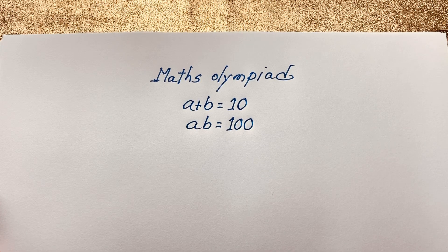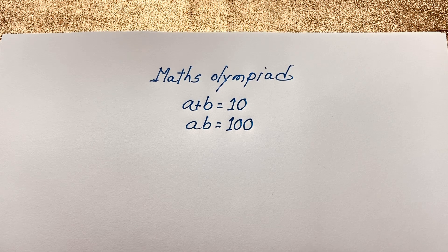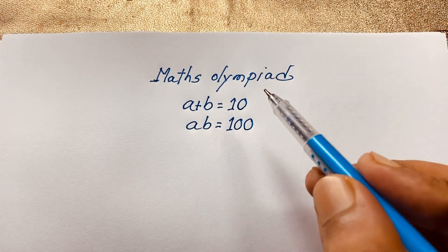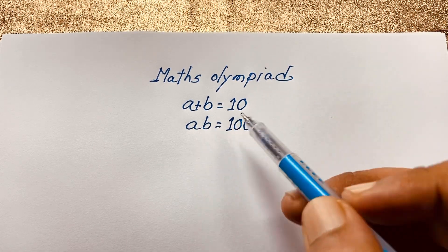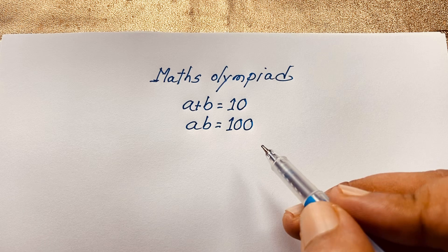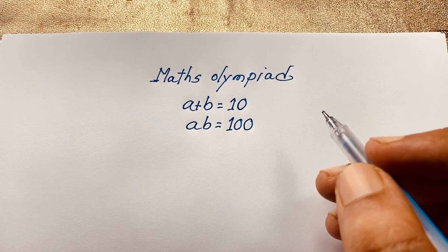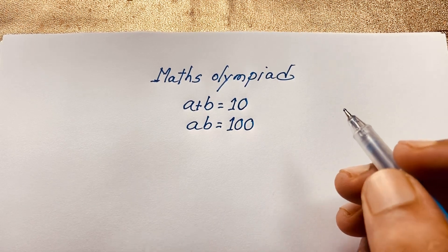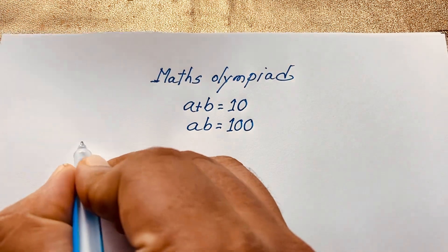Hello everyone, welcome to Russia's Classroom. Today we are solving an interesting Math Olympiad question: a plus b is equal to 10, and a times b is equal to 100. What is a times b? Let's see how to solve this interesting math problem.